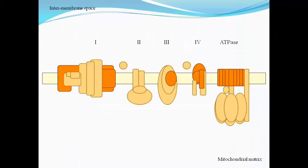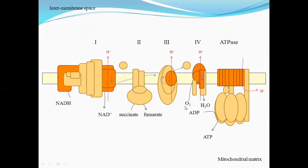The electron transport chain is composed of four complexes — one, two, three, and four — and the electron is transported by a series of reactions through these complexes. Finally, oxygen accepts the electrons and there is the formation of the water molecule.